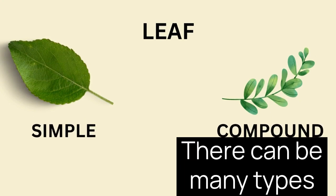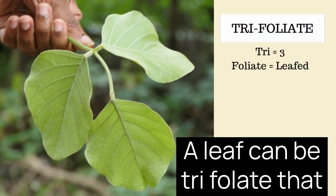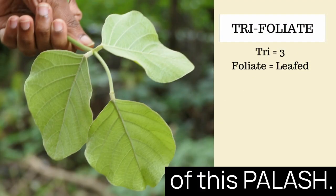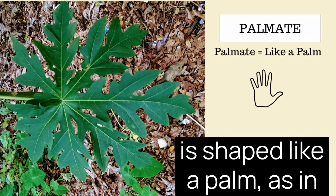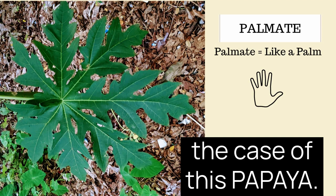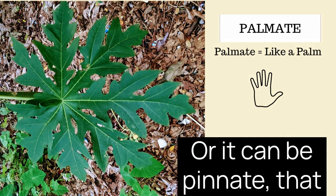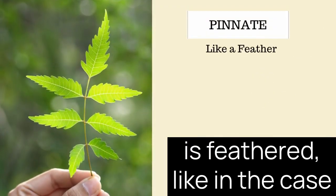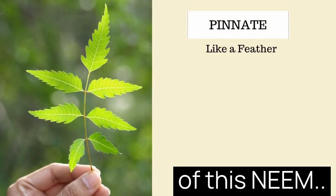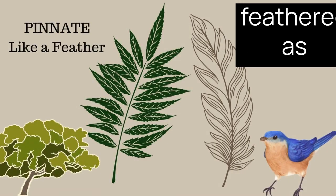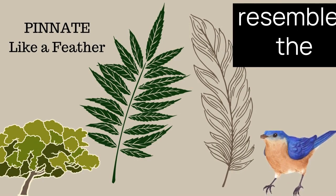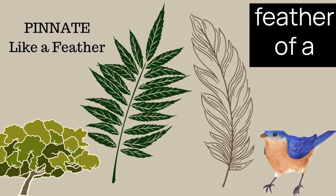There can be many types of compound leaves. A leaf can be trifoliate — that is, three-leafed — as in the case of this palash. Or it can be palmate, that is, shaped like a palm, as in the case of this papaya. Or it can be pinnate, that is, feathered, like in the case of this neem. Think of pinnate, or feathered, as referring to a shape that resembles the feather of a bird.